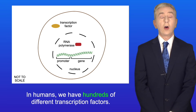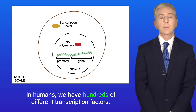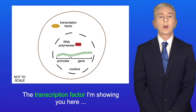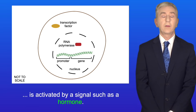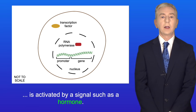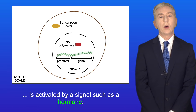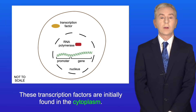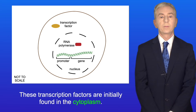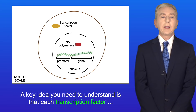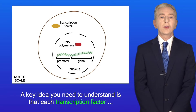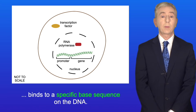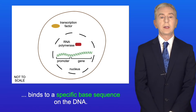In humans we have hundreds of different transcription factors. The transcription factor shown here is activated by a signal such as a hormone, and these transcription factors are initially found in the cytoplasm. A key idea you need to understand is that each transcription factor binds to a specific base sequence on the DNA.